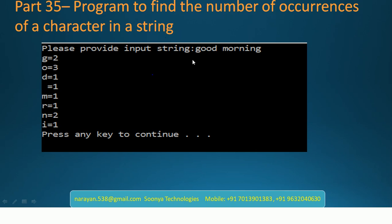For example, if we provide input as 'good morning', then we need to count the number of characters. Here G occurs 2 times, so G is equal to 2. O occurs 3 times, O is equal to 3. D occurs 1 time, D is equal to 1. Whitespace occurs 1 time, Whitespace is equal to 1, and so on.